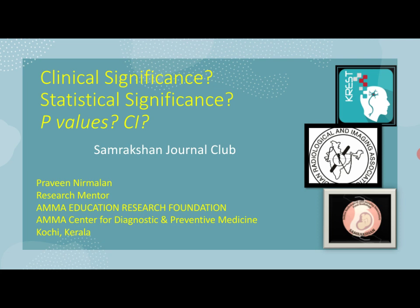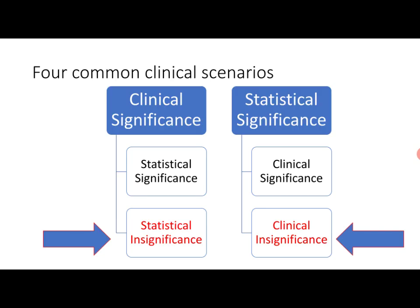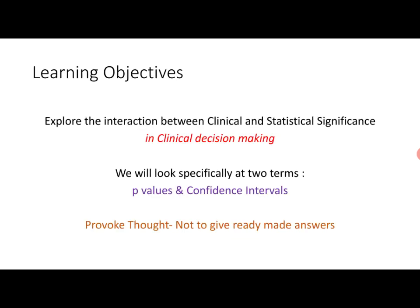We usually have four common clinical scenarios in the evidence-based pyramid. The two we are most interested in are where something is clinically significant but statistically insignificant, or statistically significant but clinically insignificant — the two scenarios where our interpretative skills must be at their best. The learning objectives include exploring the interaction between clinical and statistical significance, with particular focus on clinical decision making, using p-values and confidence intervals.